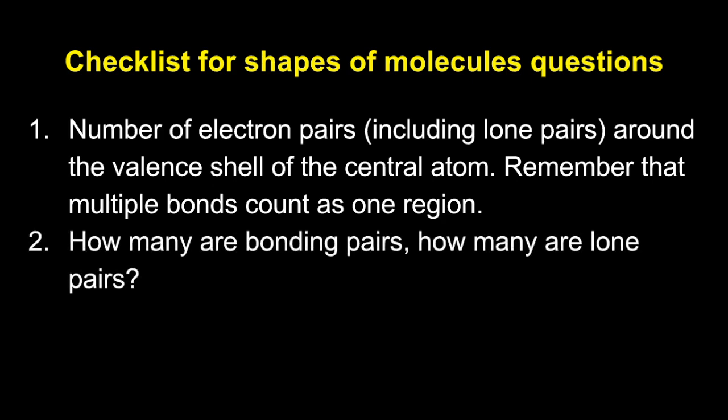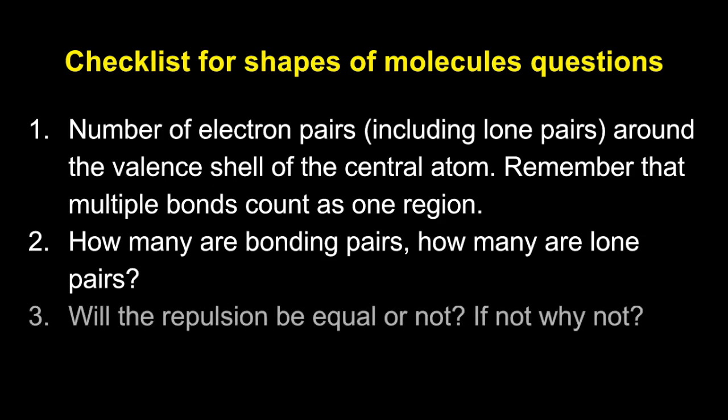Next thing you talk about is how many are bonding pairs, how many are lone pairs. So actually put the numbers into your answer. Then we talk about repulsion - will it be equal or not, and if not, why not? You get equal repulsion when all of the electron pairs are bonding pairs. If you've got any lone pairs in there, you don't get equal repulsion because lone pairs repel more than bonding pairs. And then the final thing is you give the associated shape and angle.